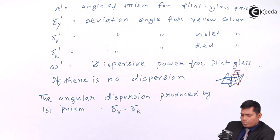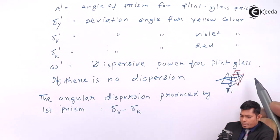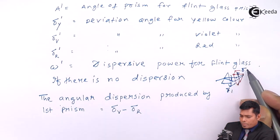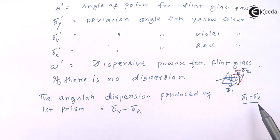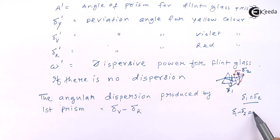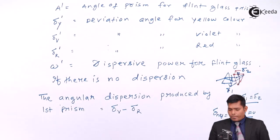This is the angular dispersion produced by the first prism — I call this delta_1 — and this I call delta_2. So basically what we are doing is delta_1 must be equal to delta_2, or delta_1 minus delta_2 must be zero. That is, the net angular dispersion should be zero. Then only there is no dispersion.